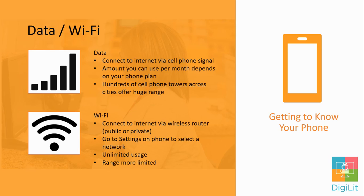However, the range will be more limited and will depend on how much access that particular Wi-Fi connection is going to be able to provide. For example, at Charlotte-Mecklenburg Library locations, you can access Wi-Fi from anywhere inside the building and then a limited space outside and into the parking lot. It's a public connection so no password is required.